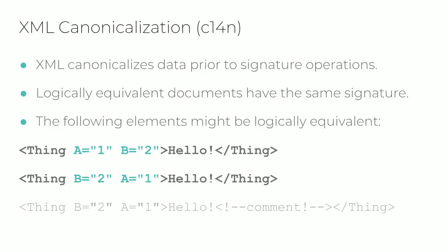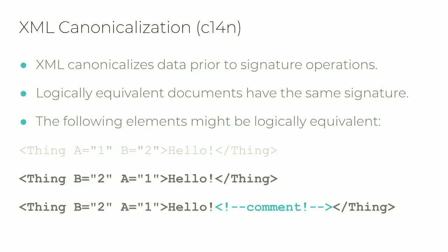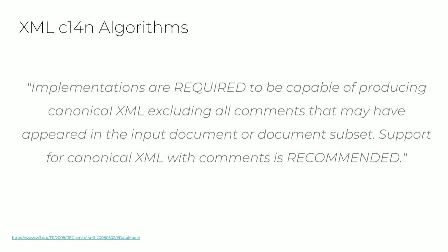Canonicalization, often abbreviated C14N, is a standard series of transformations applied to documents before signature operations, preventing minor differences from causing signatures to become invalid. These three XML documents in this slide demonstrate C14N: the first two are similar aside from reversed attribute ordering and would have the same canonical form despite different byte representations. The last document includes a comment, and whether it produces the same canonical form depends on the canonicalization algorithm used. Some C14N algorithms remove comments prior to signature operations — meaning XML comments do not affect the signature at all.